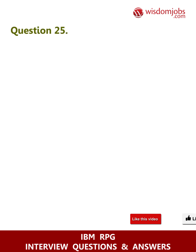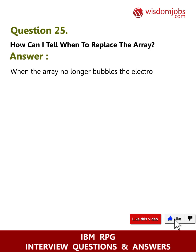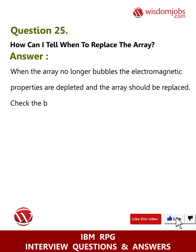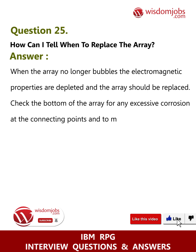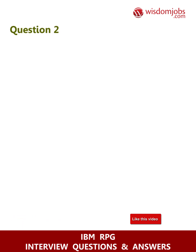Question 25: How can I tell when to replace the array? Answer: When the array no longer bubbles, the electromagnetic properties are depleted and the array should be replaced. Check the bottom of the array for any excessive corrosion at the connecting points and to make sure there is a solid joint.